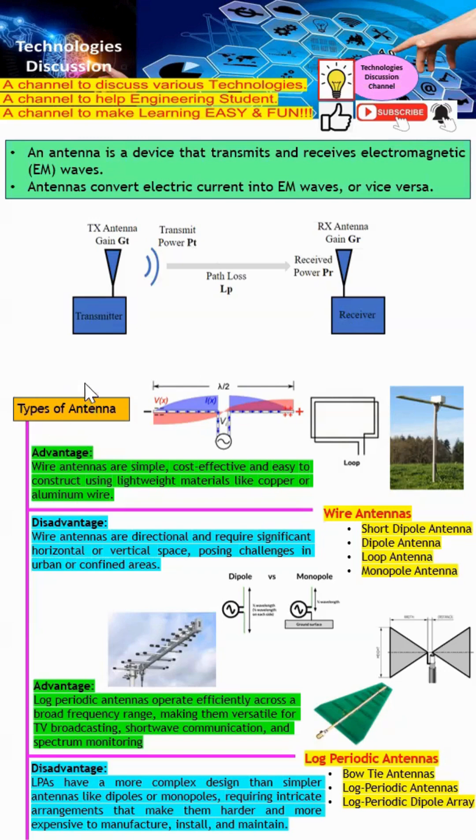Next, I want to do a quick discussion on the types of antenna. The first one will be wired antenna. The advantages of wired antenna are that they are simple, cost-effective, and easy to construct using lightweight materials. However, wired antennas are very directive and require significant space, which becomes an issue in confined areas.